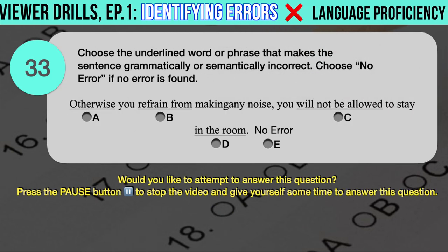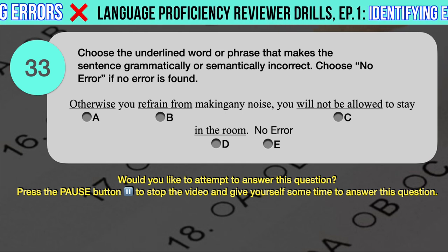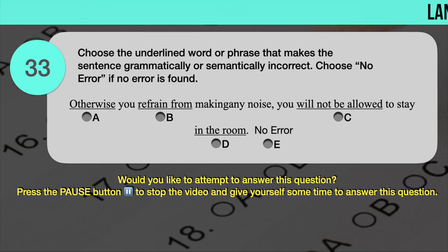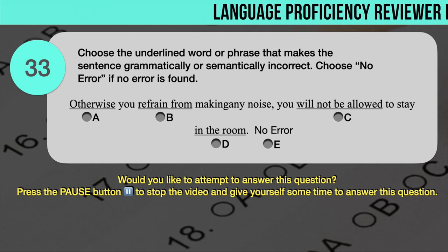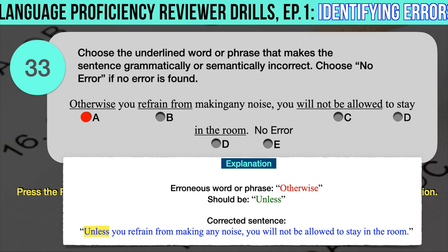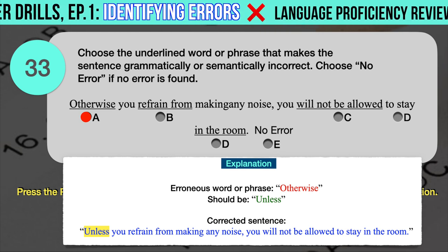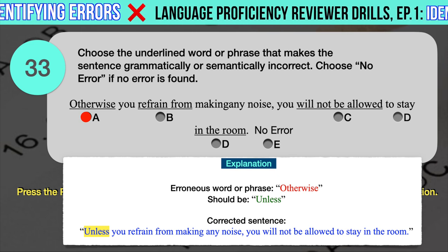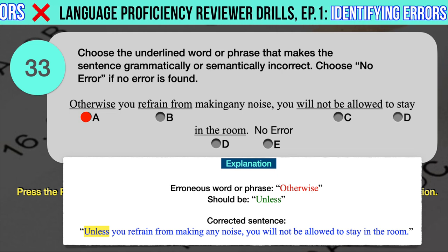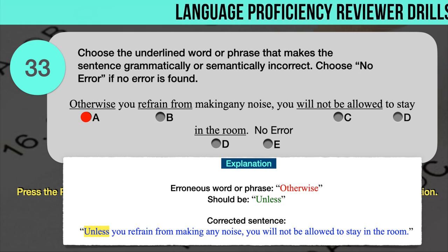Drill question number 33. 'Otherwise you refrain from making any noise, you will not be allowed to stay in the room.' The underlined words are: A. Otherwise, B. Refrain from, C. Will not be allowed, D. In the room. The correct answer is A. 'Otherwise' should have been 'unless.' 'Otherwise' talks about results, while 'unless' talks about conditions. Refraining from making noise is a condition, not a result. Correct sentence: Unless you refrain from making any noise, you will not be allowed to stay in the room. Note: if we want to use 'otherwise,' we'd rewrite as: You must refrain from making any noise, otherwise you will not be allowed to stay in the room.